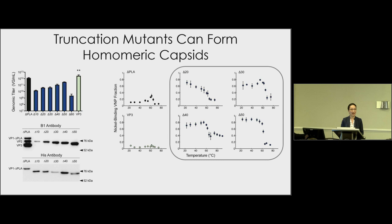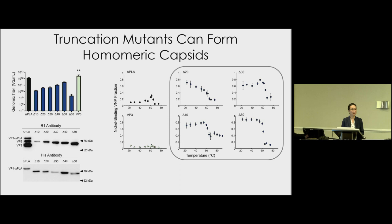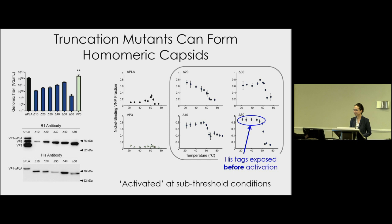Looking at the activatable peptide display functionality of these mutants, we see all kinds of interesting behavior. The VP3-only capsids are our negative control — that line is flat, no activation. Above it, you see a nice peak around 60 degrees Celsius for the standard virus. All the different truncation mutants have very different activation profiles. Focusing on del-51, where the first 50 residues of VP2 are removed, we can capture a large fraction of these viruses before the activation temperature of 60 degrees Celsius, indicating the his-tags are already surface-displayed prior to activation.